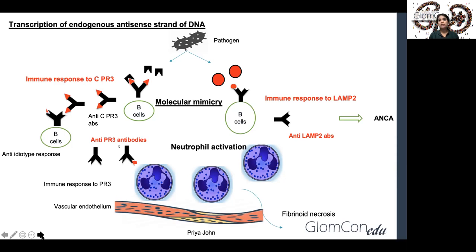The activated neutrophils get primed by pro-inflammatory cytokines, causing bursting of the neutrophils and the release of toxic granules and reactive oxygen species, which damage the vascular endothelium by means of fibrinoid necrosis.